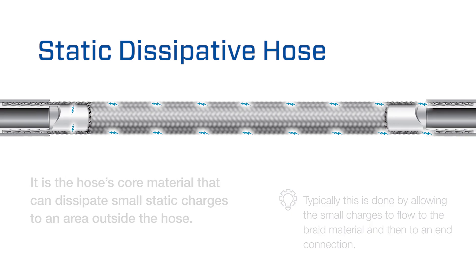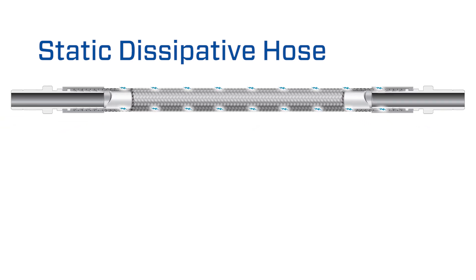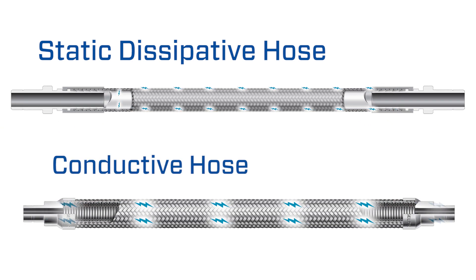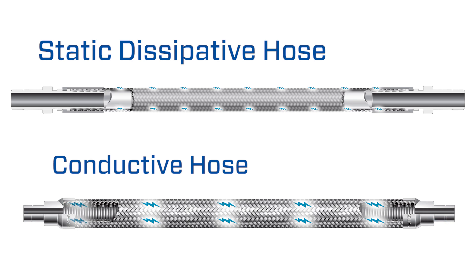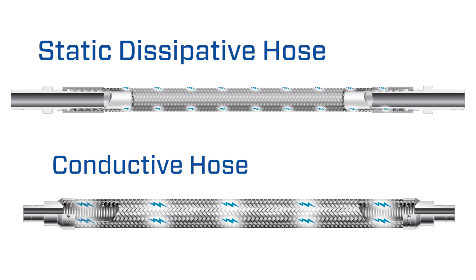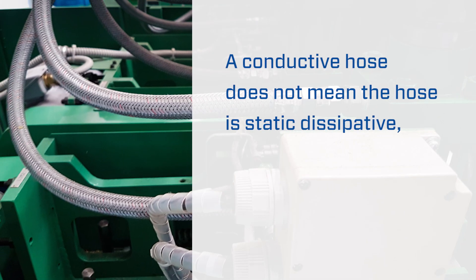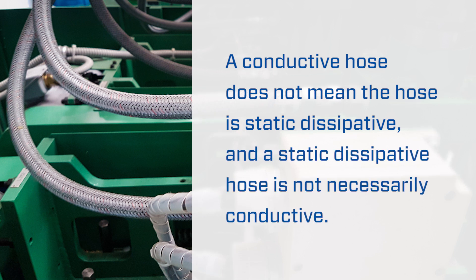However, it's critical to remember that static dissipation and conductivity are two completely distinct characteristics of a hose. A conductive hose does not mean that the hose is static dissipative, and a static dissipative hose is not necessarily conductive.